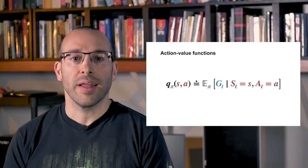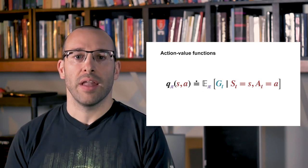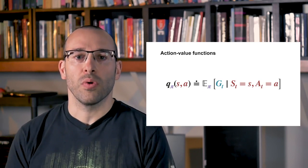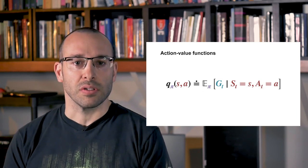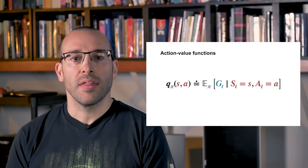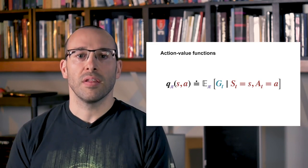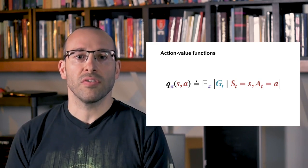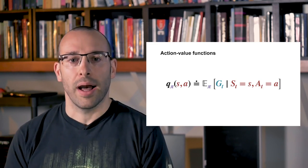We can also define an action value function. An action value describes what happens when the agent first selects a particular action. More formally, the action value of a state is the expected return if the agent selects action A and then follows policy π.